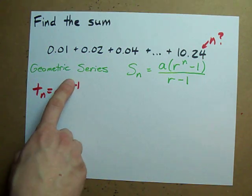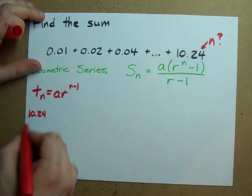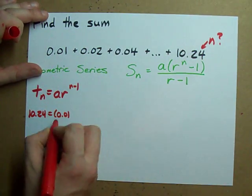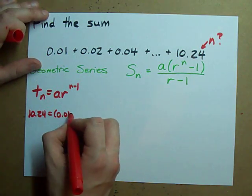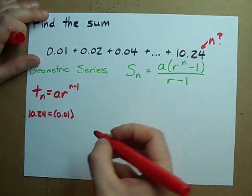If we want to find N for 10.24 we're plugging in 10.24 for TN. We plug in our first number for A because it's our initial, our first term. There we go.